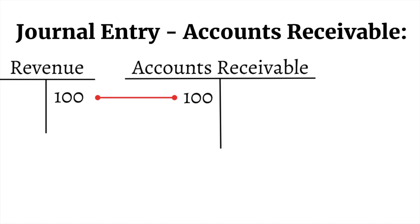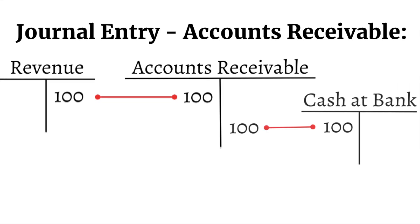Once the cash does come in, we make a second journal entry and we credit Accounts Receivable — so these cancel out — and then we debit Cash at Bank to show that the cash has come in.